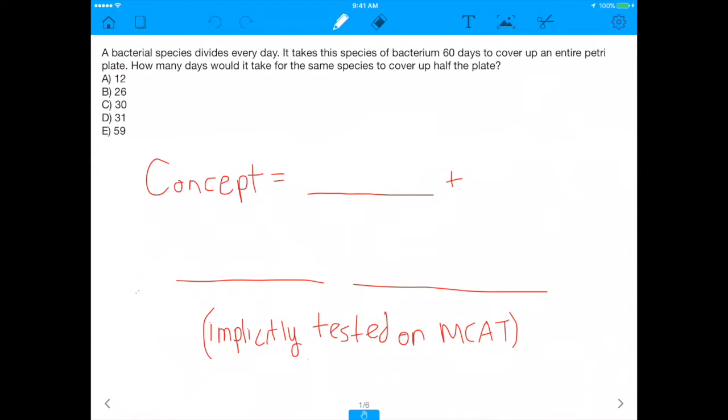So with that, let's get started on this problem, which says a bacterial species divides every day. It takes the species of bacterium 60 days to cover an entire petri plate. How many days would it take for the same species to cover up half the plate? So the concept here is obviously biology, right? But more importantly than that, it's also quantitative reasoning.